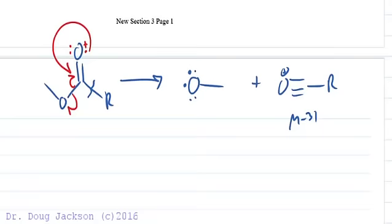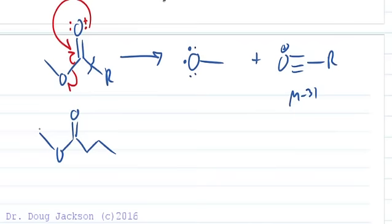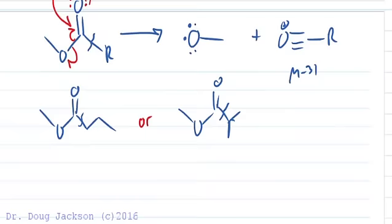Alpha cleavage on the other side - we know that we've got three carbons left because we have C5. One, two, three, four, five - C5. If we have this ester or we have this ester, we could have alpha cleavage here or here to give M minus 43.